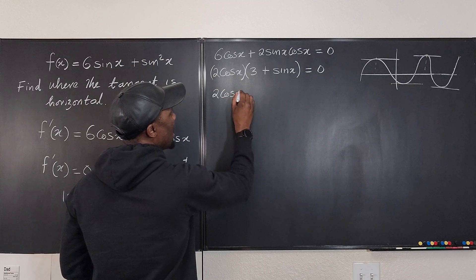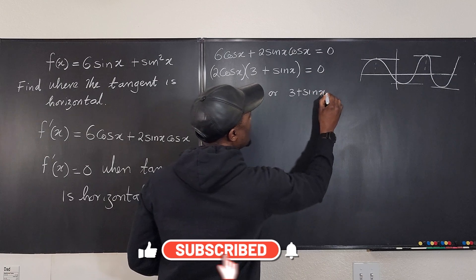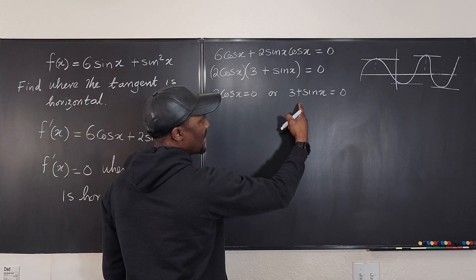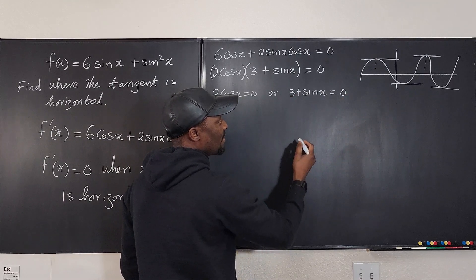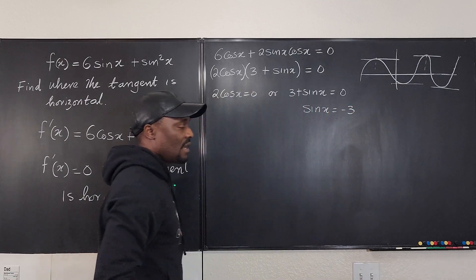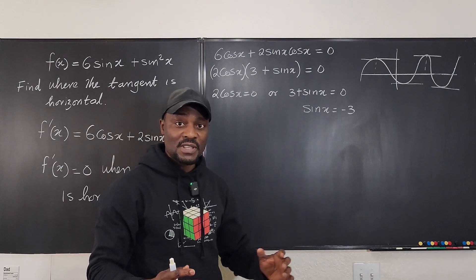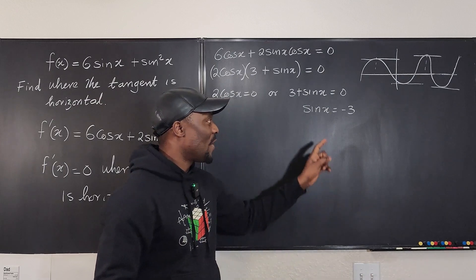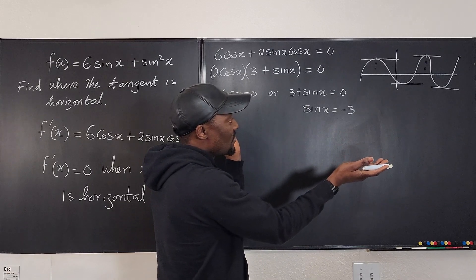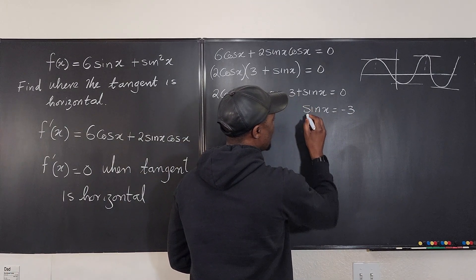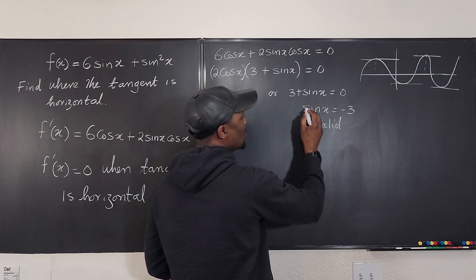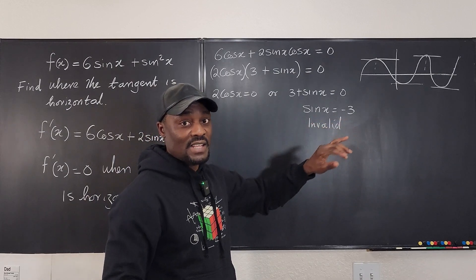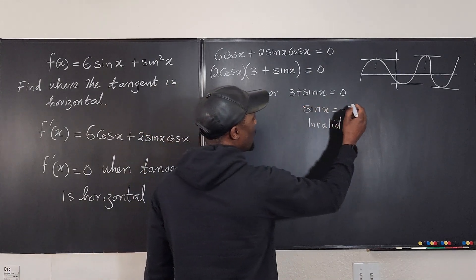So we can say two cosine x equals zero, or three plus sine x is equal to zero. Let's take care of the second case first. If you subtract three from both sides, you get sine x equals negative three. Now this is impossible — the value of sine x cannot be greater than one or less than negative one. The absolute value of sine x is at most one, so any number greater than one is not valid. There is no real value of x for which sine x is negative three. So this case is invalid.